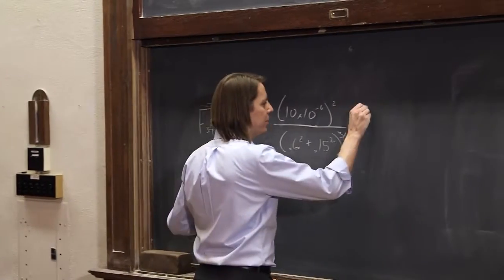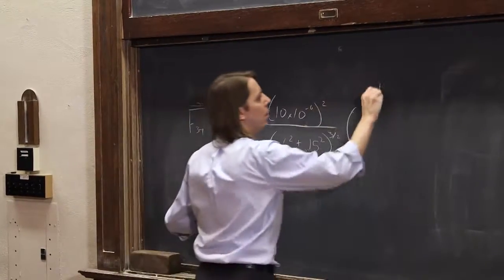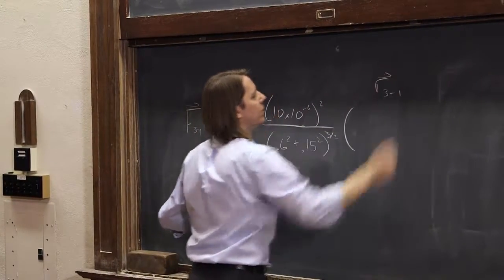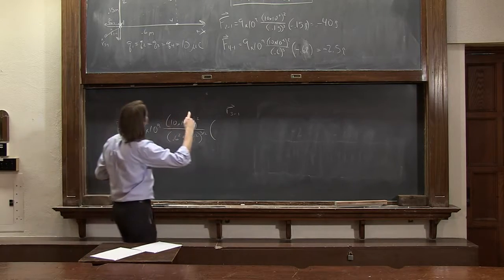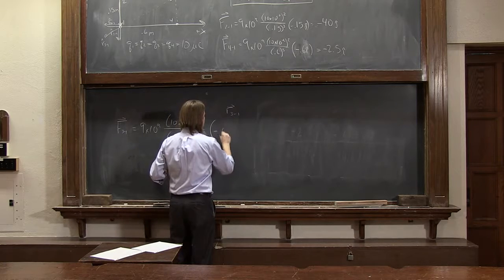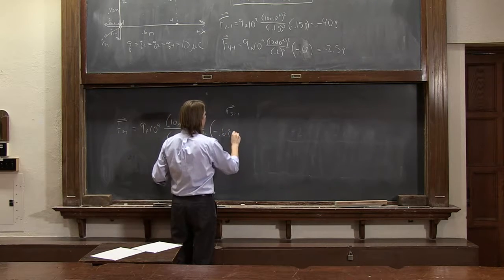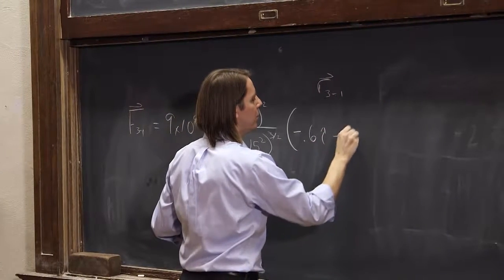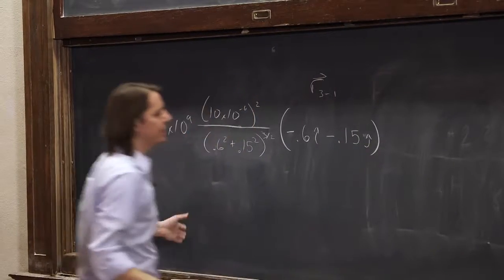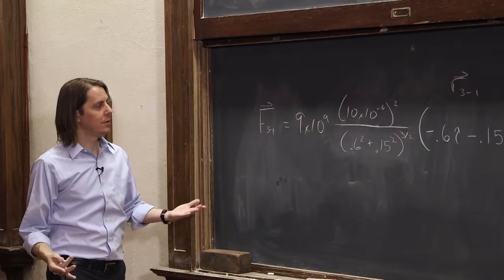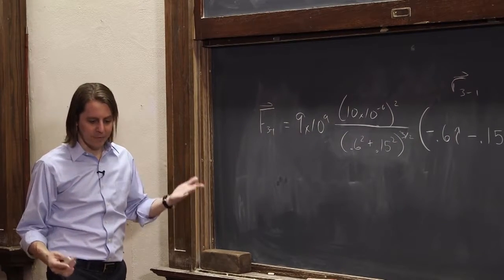And now, we don't write the unit vector. We just literally write r 3,1 as a vector. Well, we look at our diagram and you remember it was minus 0.6 i hat and minus 0.15 j hat. And that's it. That is your vector.